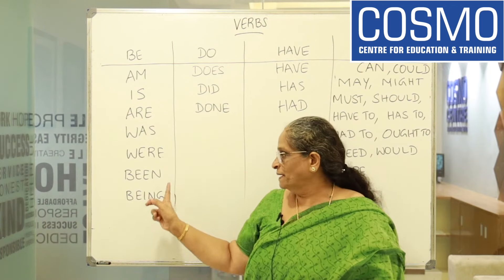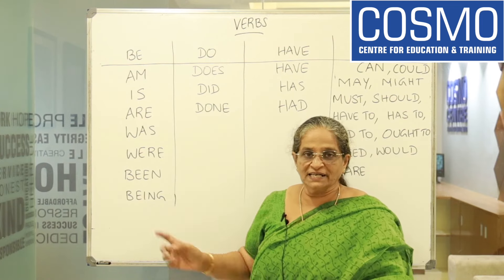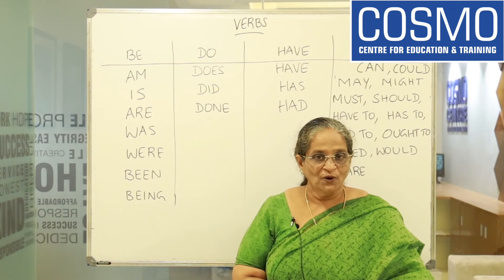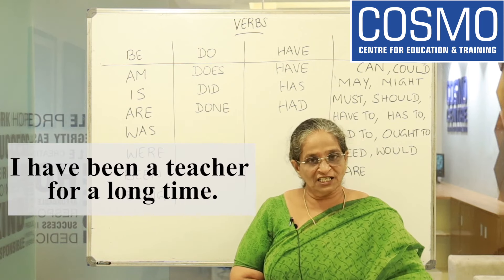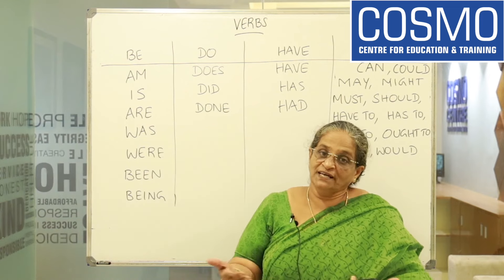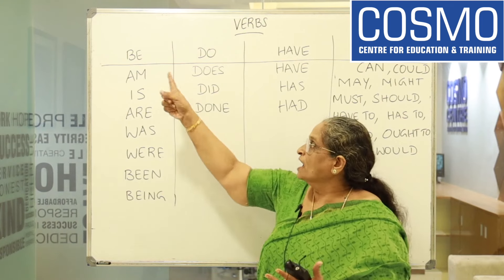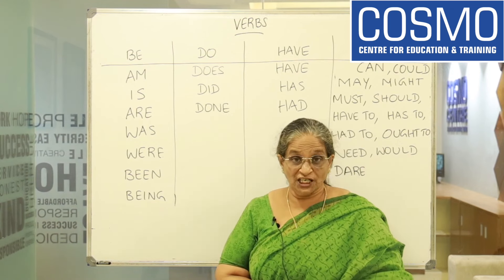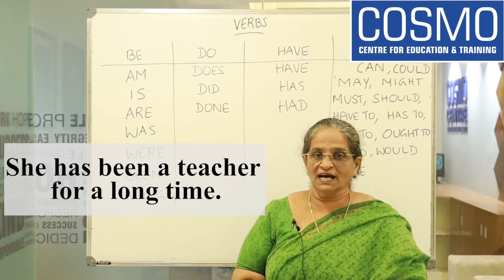BEEN — it makes sense only if you add HAVE, HAS, or HAD before it. For example: 'I have been a teacher for a long time.' 'She has been a teacher for a long time.' So BEEN is the past participle form, always used with perfect auxiliaries.